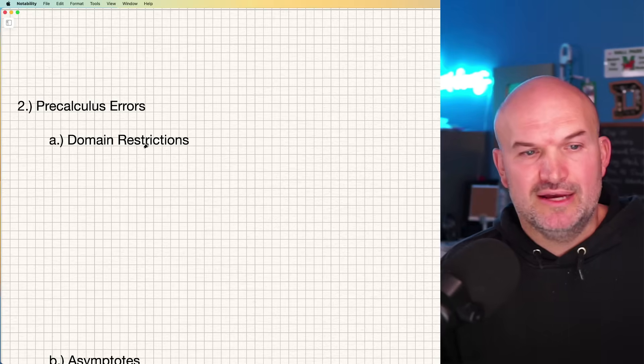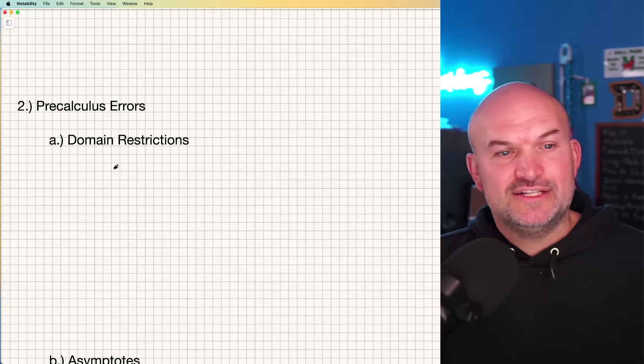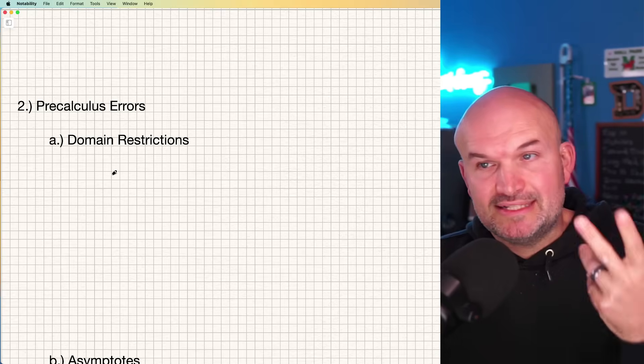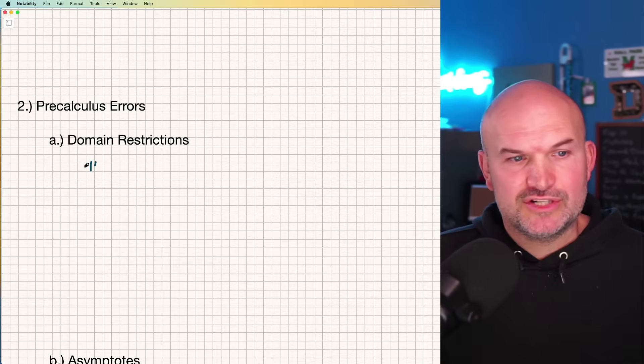Remember these domain restrictions. There's two common ones that we like to focus on: you cannot divide by zero, and you cannot take the square root of a negative number. Remember those two restrictions.